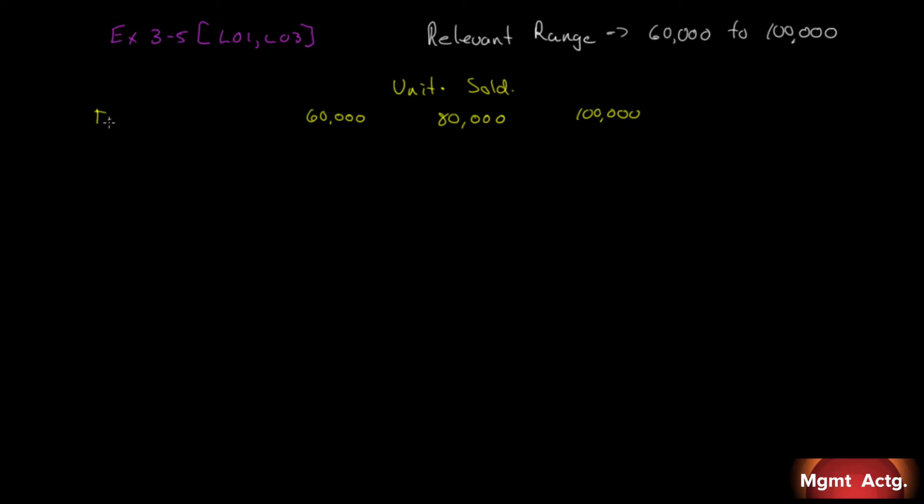And then we're given our costs along the side. We're given total costs, so we start with variable costs, fixed costs, and we have a total for that. Then we have cost per unit, a variable cost per unit, a fixed cost per unit, and a total cost per unit.